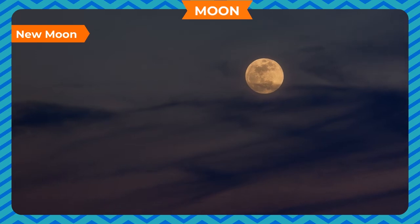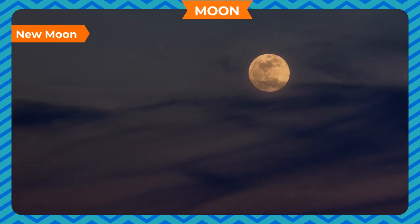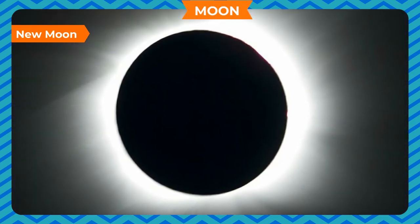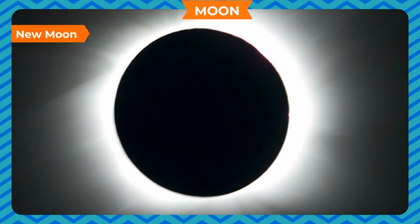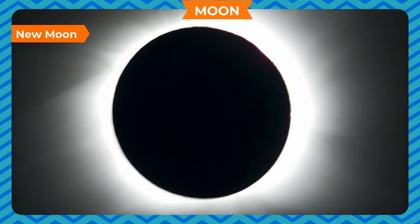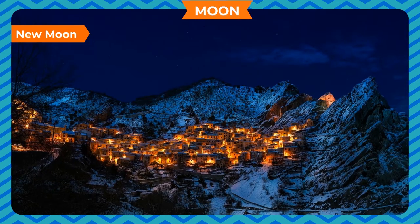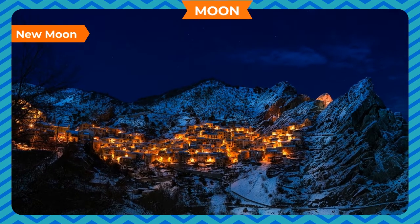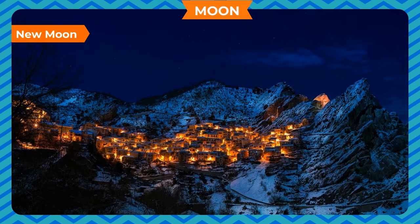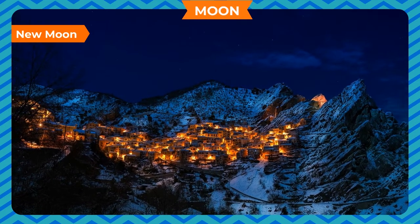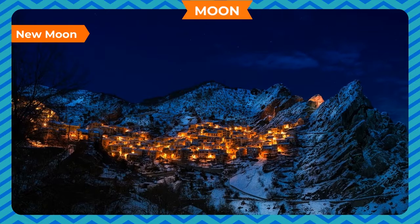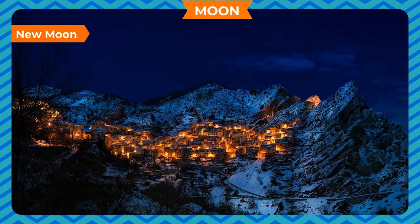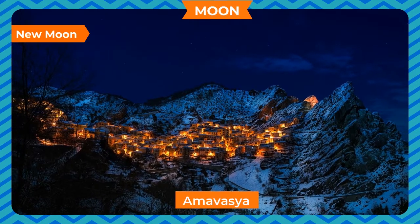New Moon — when the Earth and the Sun are on two opposite sides of the moon, the moon appears completely dark. As a result, we cannot see the moon. This is new moon day. The new moon day is also called Amavasya.